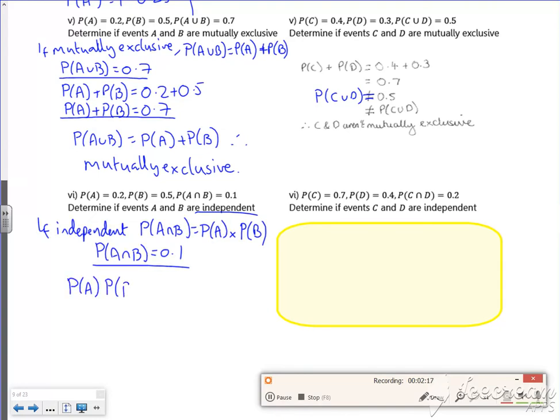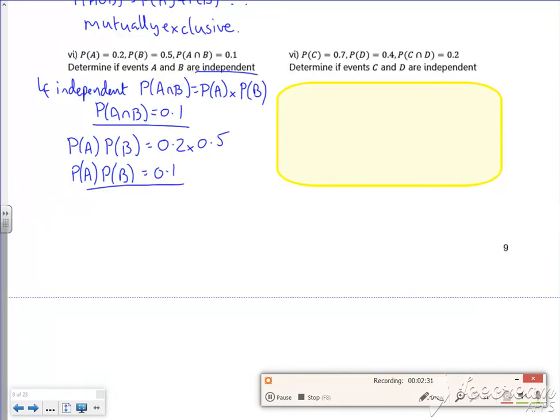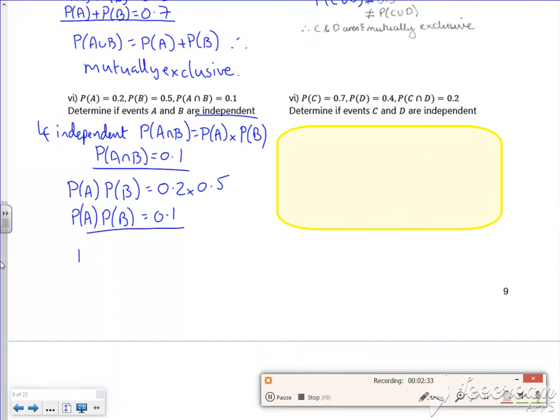And A times B is 0.2 times 0.5, so the probability of A times B is 0.1. Following a similar layout to what I've done above, the probability of A and B equals the probability of A times the probability of B, therefore they are independent.